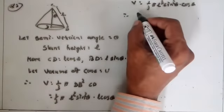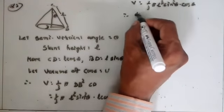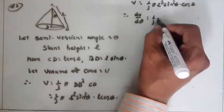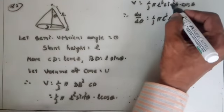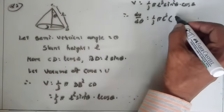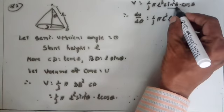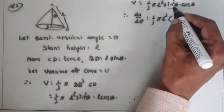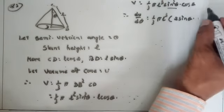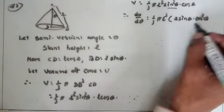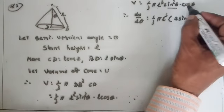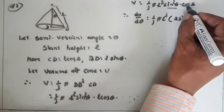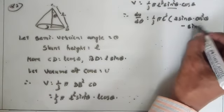First derivative: dV/dθ = (1/3)πl³ · [2sinθ cos²θ − sin³θ]. This is obtained by applying the product rule: derivative of sin²θ is 2sinθ·cosθ times cosθ, plus sin²θ times derivative of cosθ which is −sinθ, giving −sin³θ.